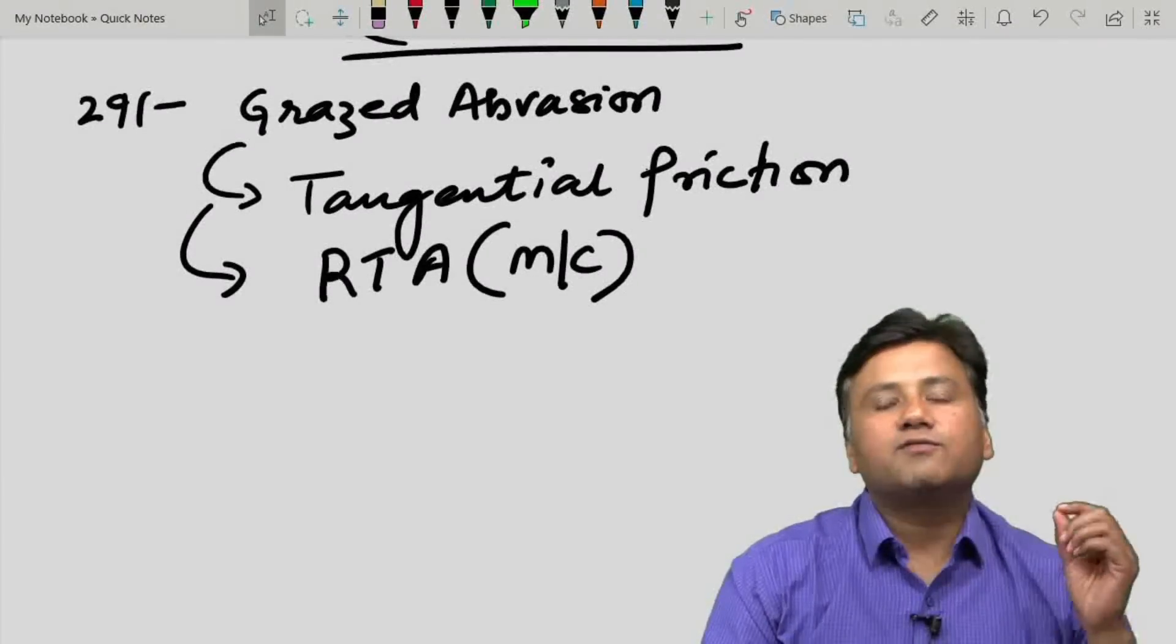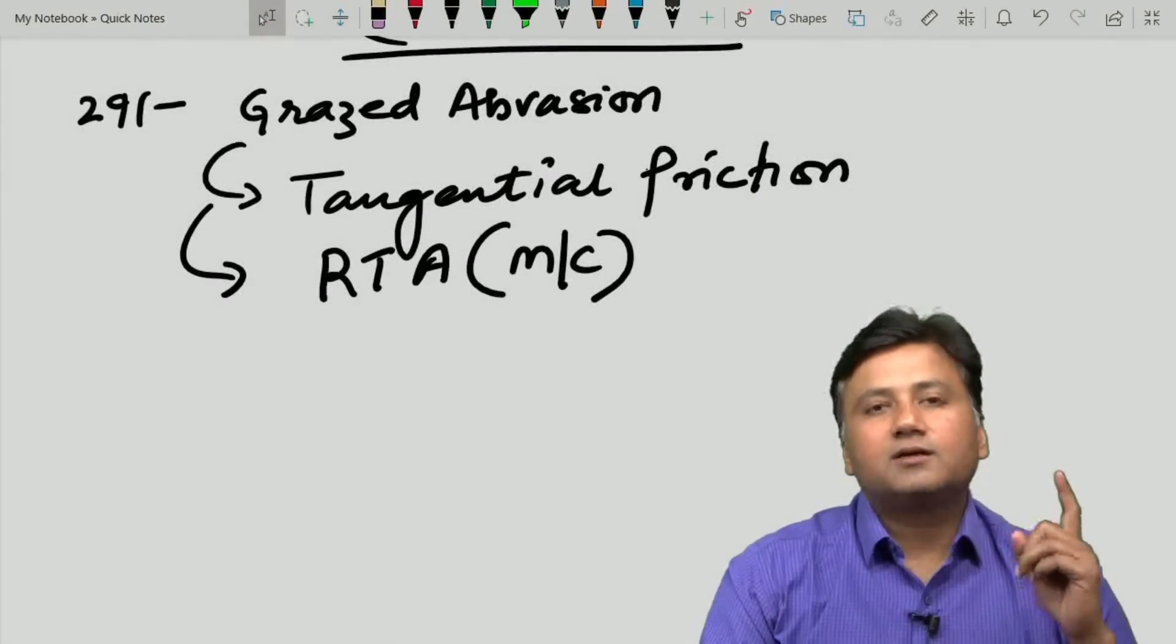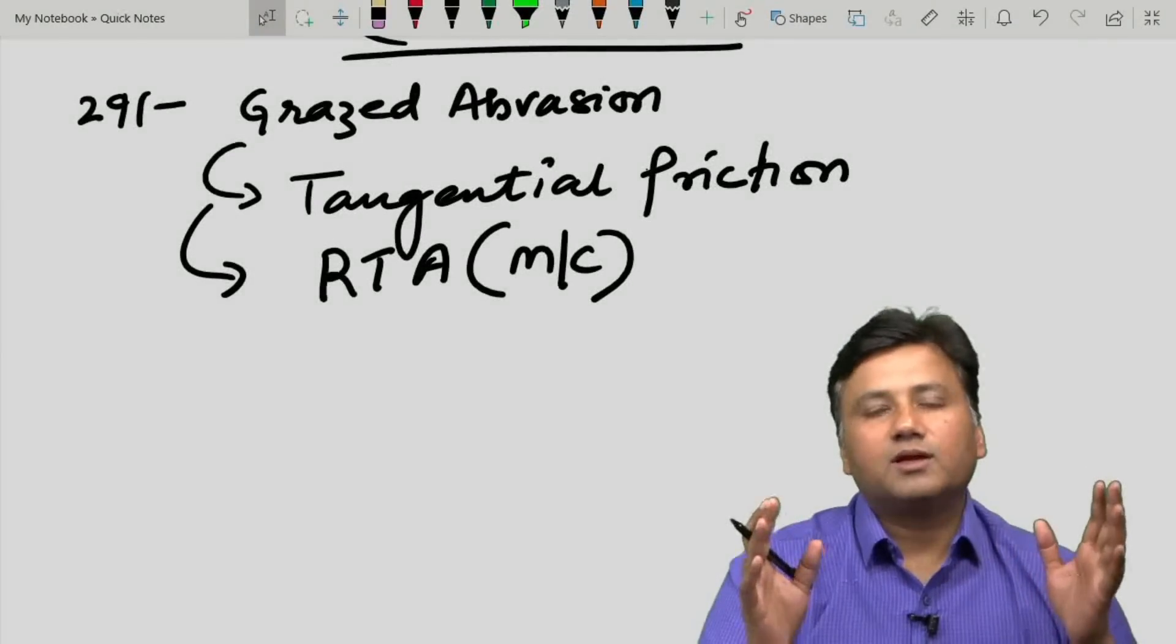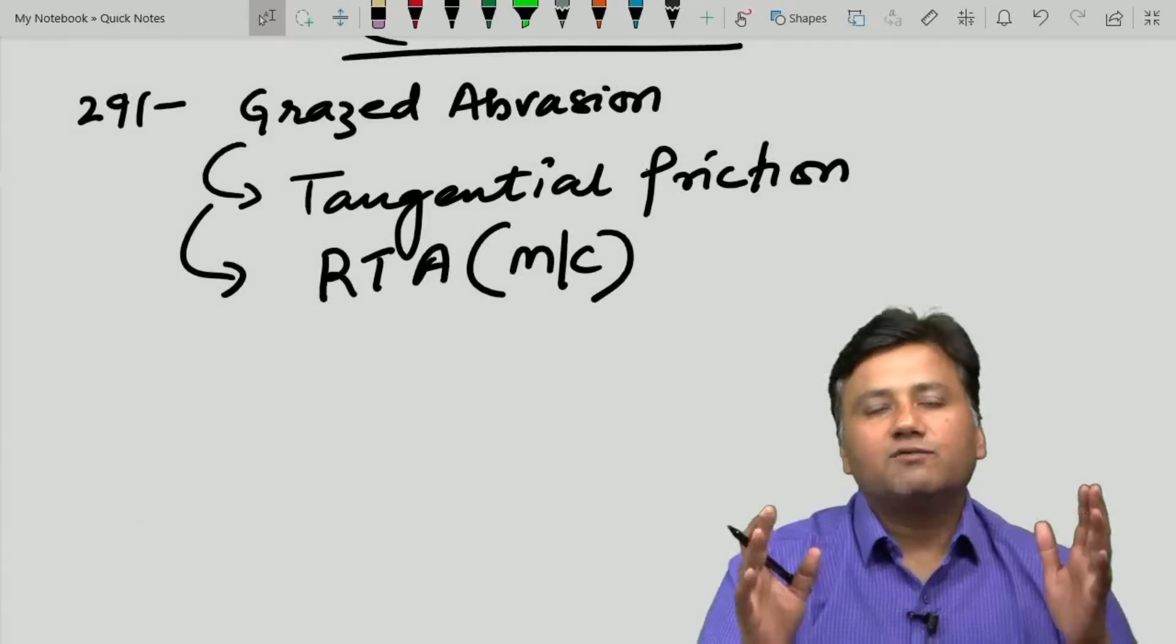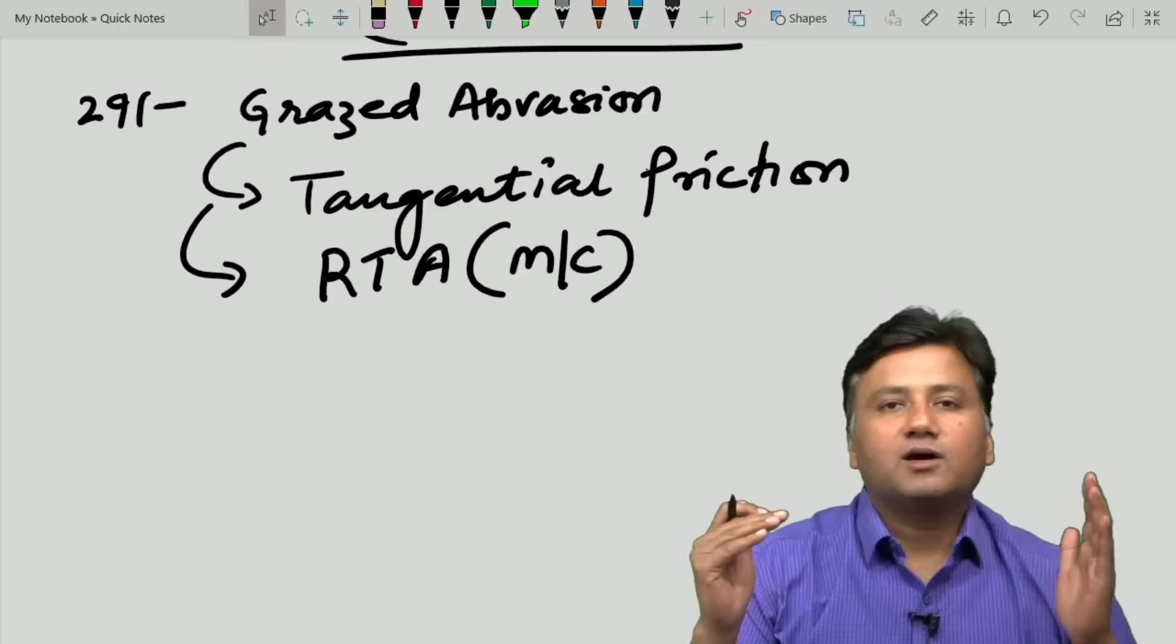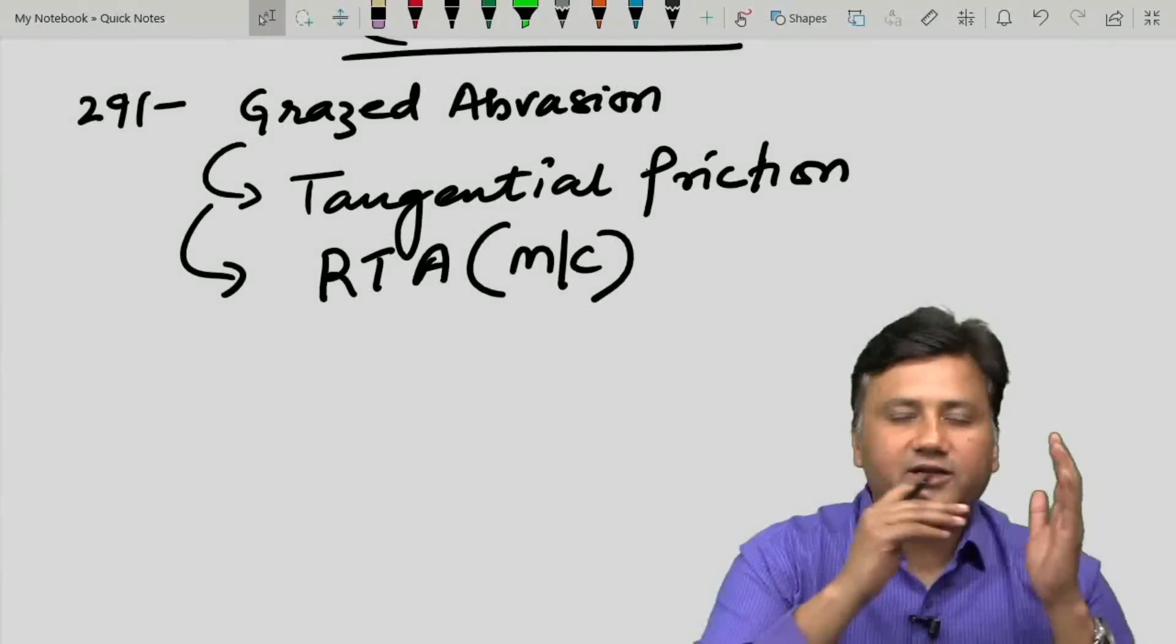In road traffic accident, if you recall, the pattern of injuries that develop in the victim include primary impact injury when the car primarily hits the pedestrian.